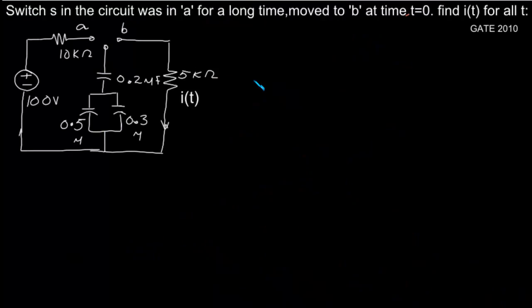The switch S in the circuit was at position A for a long time and is moved to position B at t equal to 0.